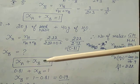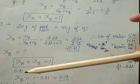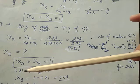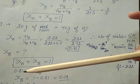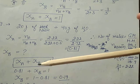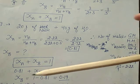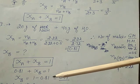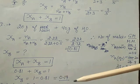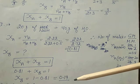Now calculate mole fraction of B. Using zeta A plus zeta B equals 1: zeta A is 0.81, so 0.81 plus zeta B equals 1, giving zeta B equals 1 minus 0.81, which is 0.19.